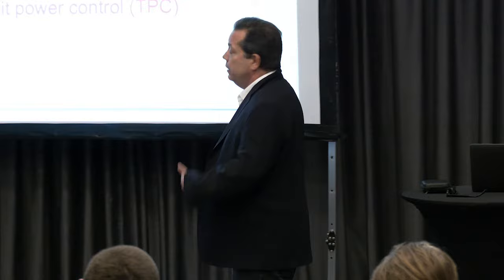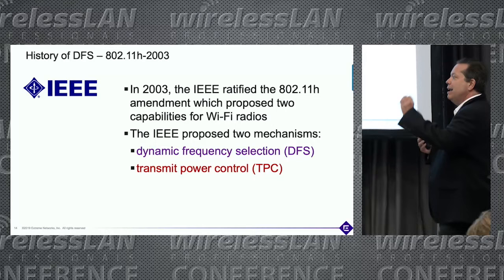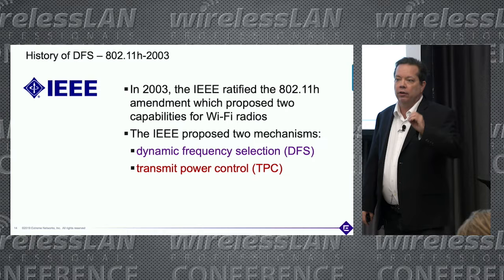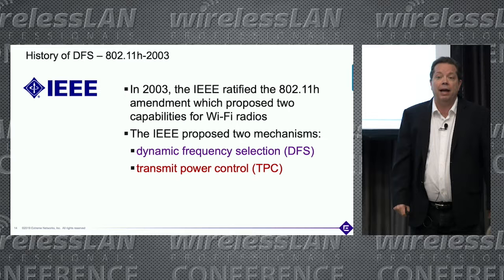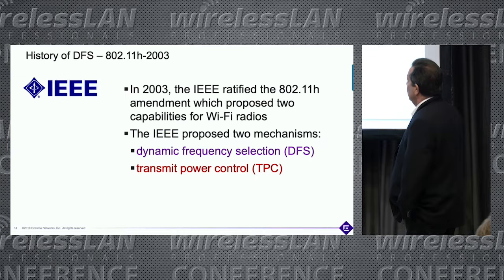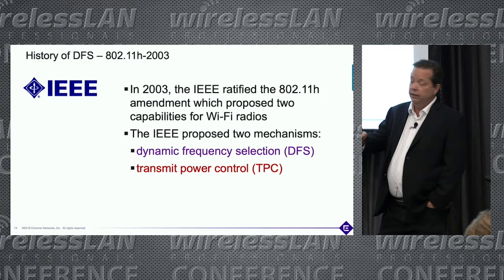The IEEE decided to define mechanisms on how Wi-Fi radios would deal with radar avoidance. Two methods were originally defined all the way back in 2003 in the amendment called 802.11h: dynamic frequency selection, which is our main topic, and transmit power control.